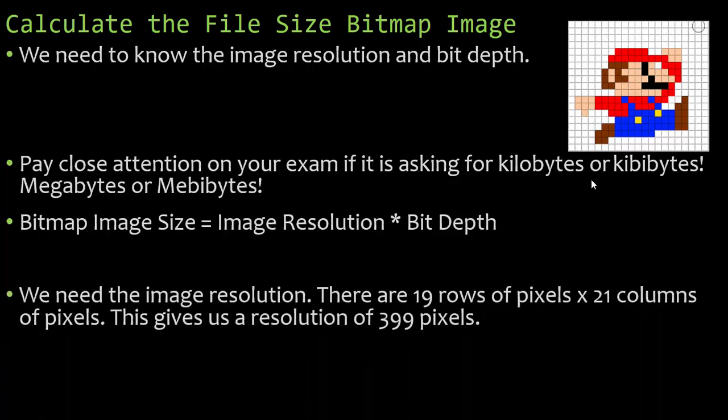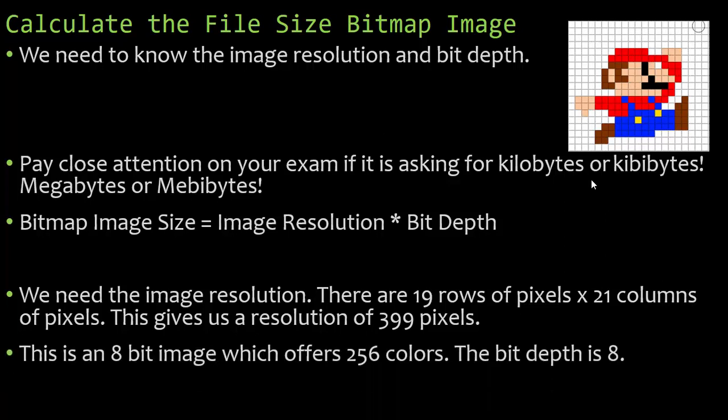In this picture there are 19 rows of pixels by 21 columns of pixels, giving us an image resolution of 399 pixels. This is an 8-bit image, which offers 256 different colors. We know the bit depth is 8, so we do 399 times 8, which is 3,192 bits. To convert that to bytes, I divide by 8, which gives us 399 bytes. That's just going to bytes — we're going to need to go further.